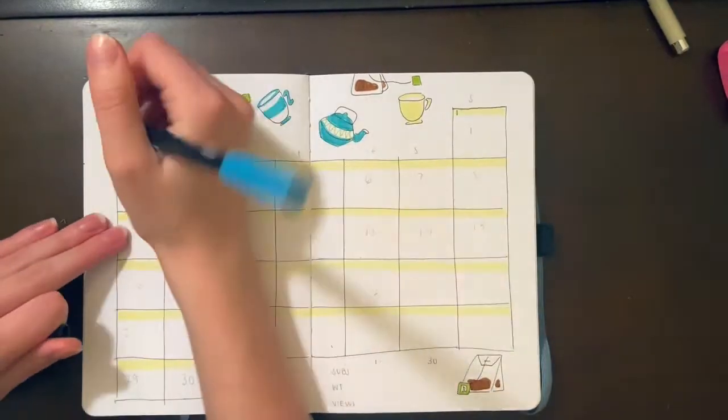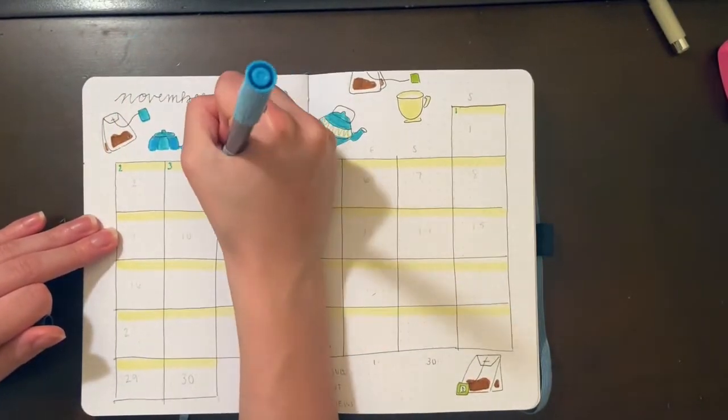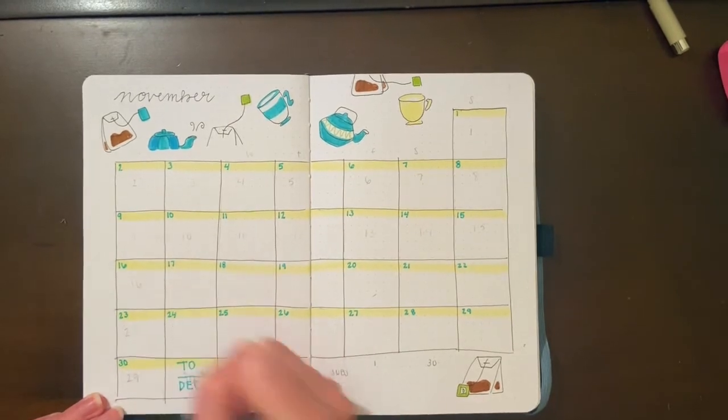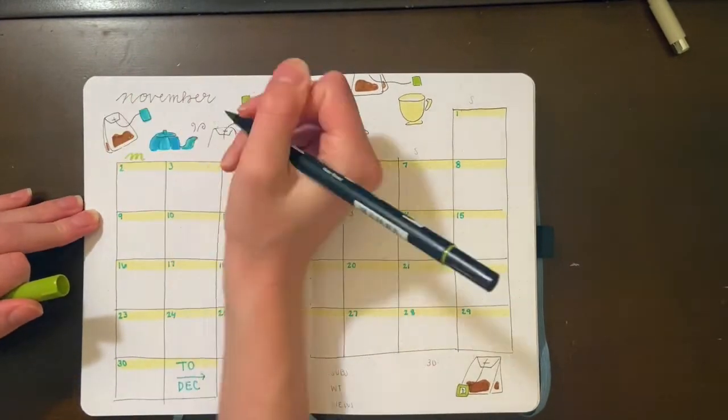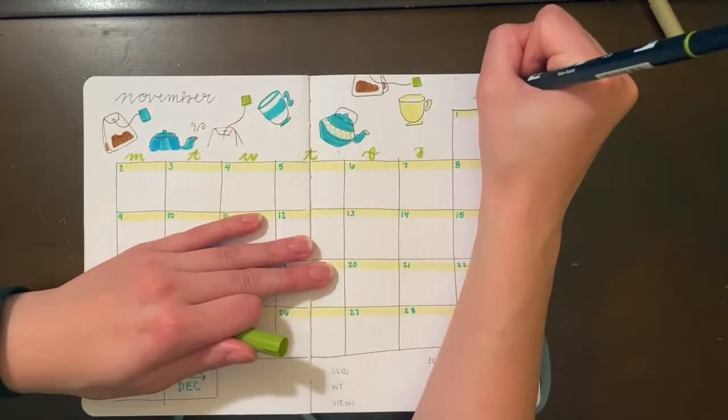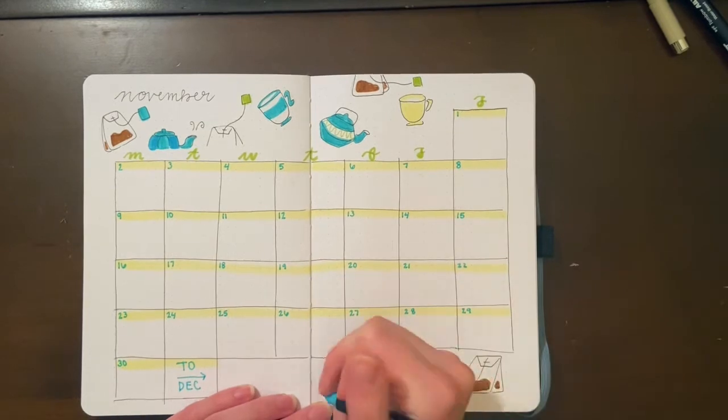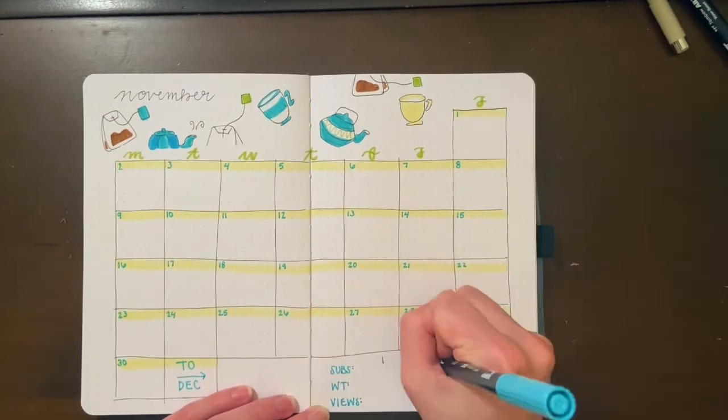For some reason, I feel like no matter how many times I check my boxes and look at an example of the calendar, I always add one too many. So for my extra box, I just put a little arrow and wrote 'to December.' Then I filled in the labels for my YouTube tracker and my calendar spread was finished.